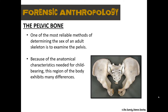After the remains have been recovered in the field, they're usually transported to a medical examiner's office or other laboratory facility for examination. For each set of human remains, forensic anthropologists will attempt to provide a biological profile — meaning sex, age at death, ancestry, and height — as well as other clues. They'll also try to determine whether the bones provide evidence of cause of death and time since death. The pelvic bone specifically is used to determine the sex of an individual.